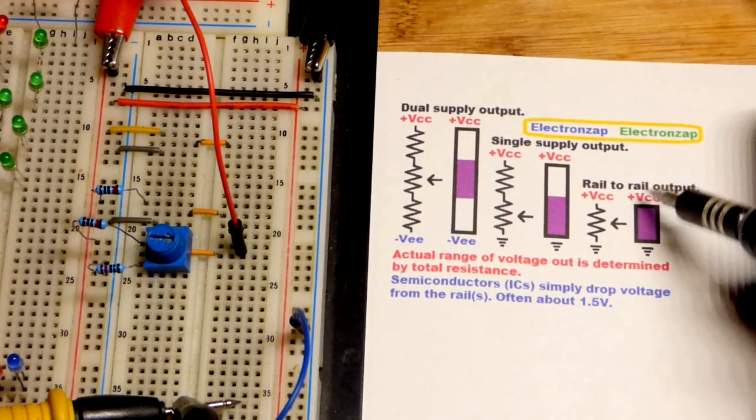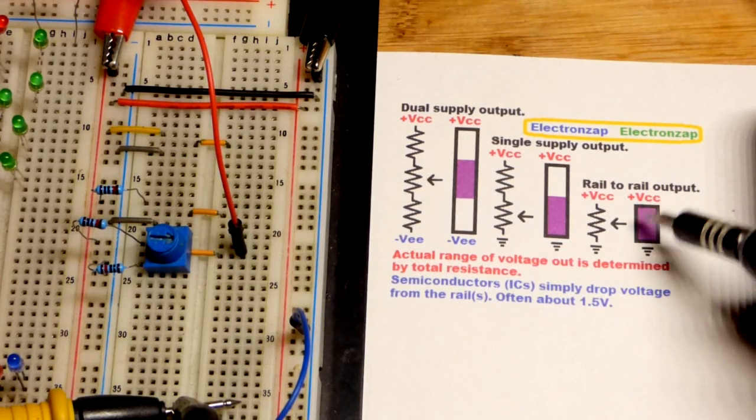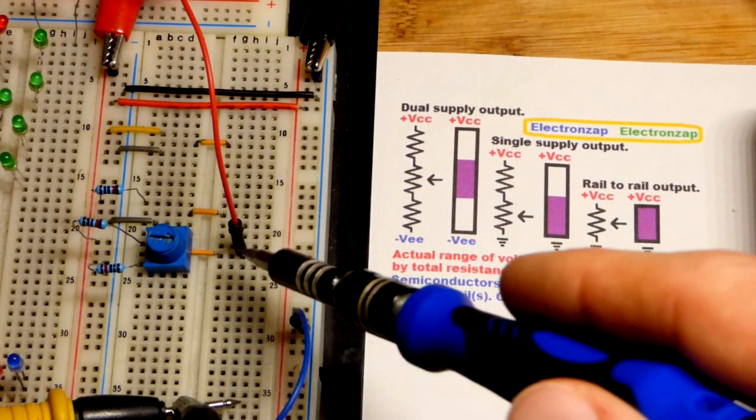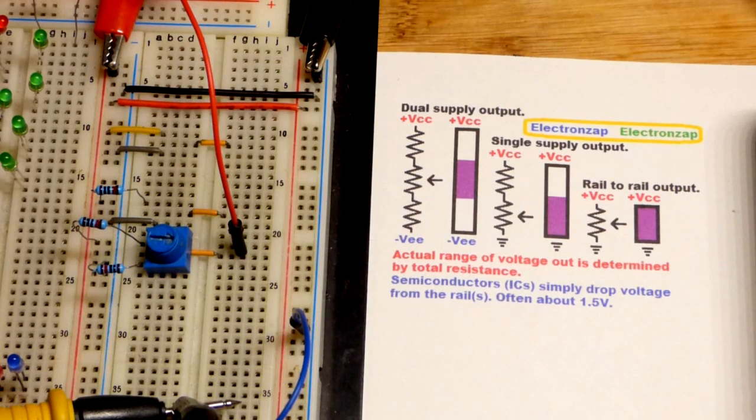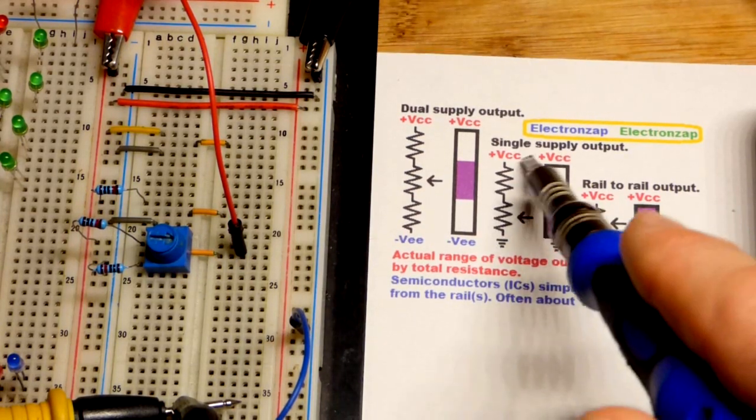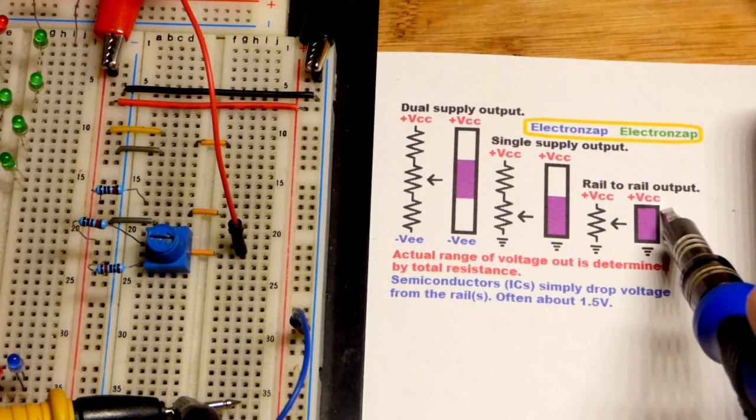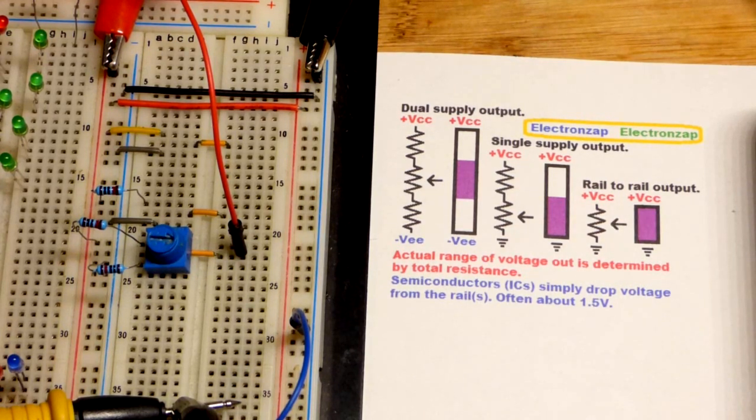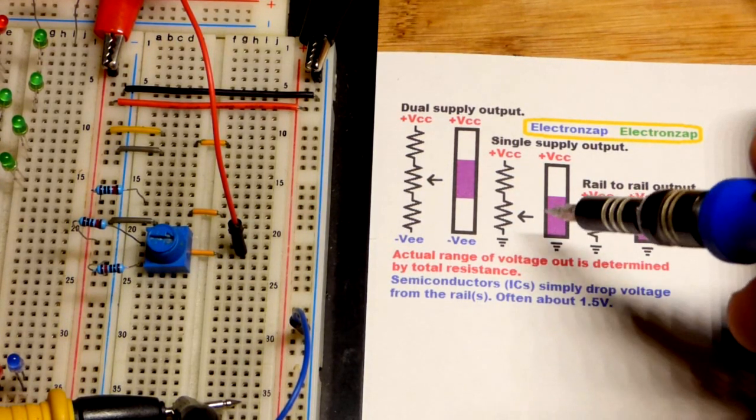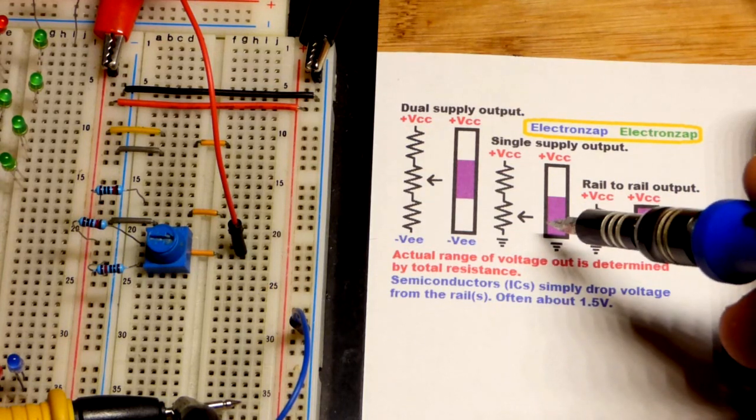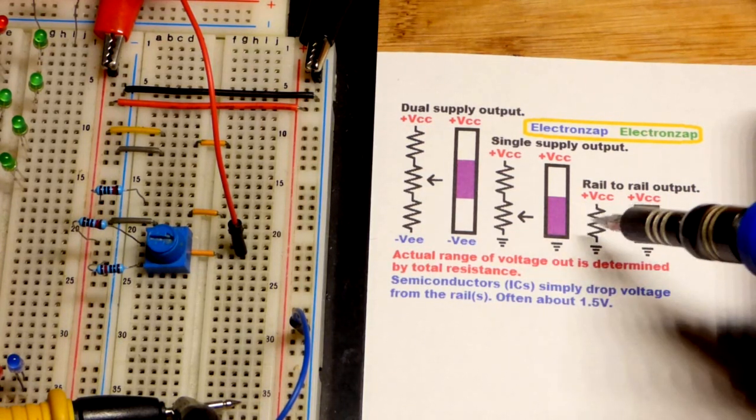But if you need a wide voltage range, you may have to settle with less power from the output. But then you can amplify that with other circuitry. So that's why single supply and rail to rail are more common now. Because often you need your signal to get to zero volts or close to it. And it's easy to amplify it.